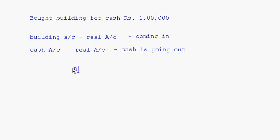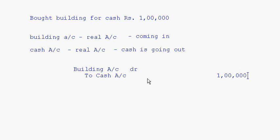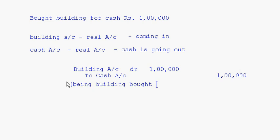Both are real accounts, so the rule for real accounts applies — debit what comes in. Building is coming in, so building account is debited. Cash is going out, so credit what goes out — cash account is credited. The amount is 1 lakh on both sides. Narration: being building bought for cash.